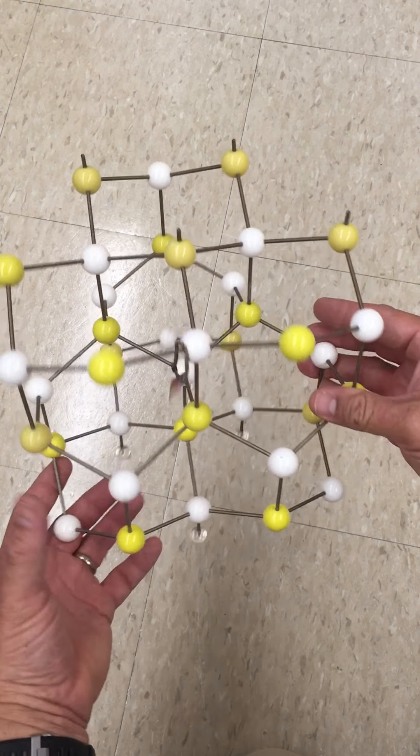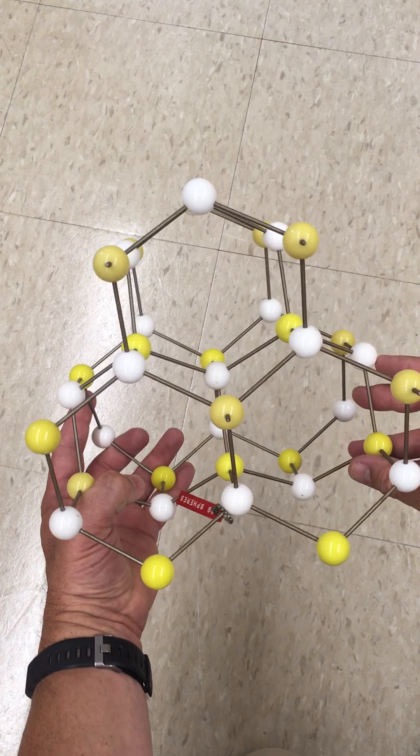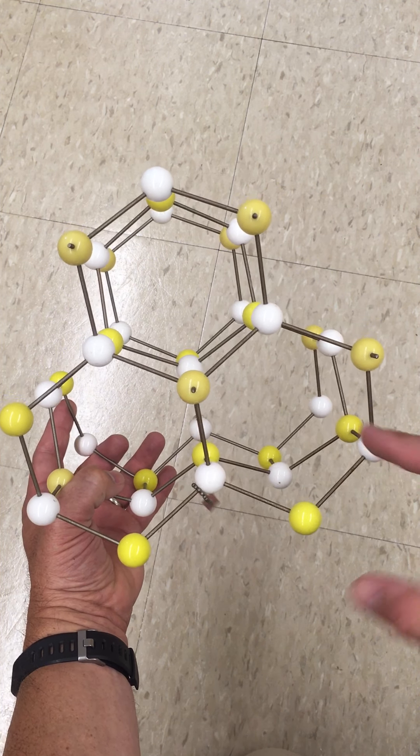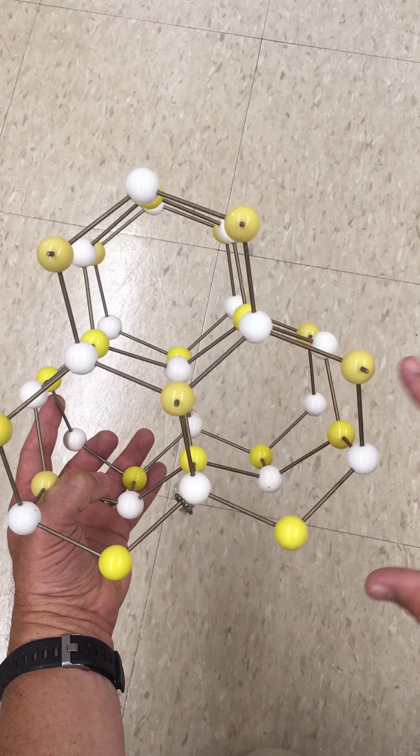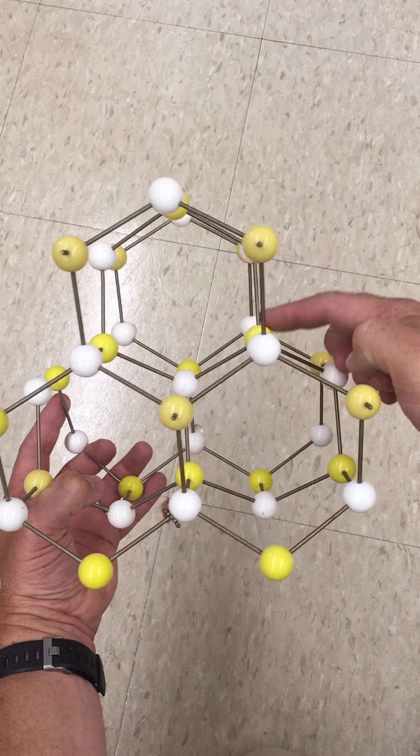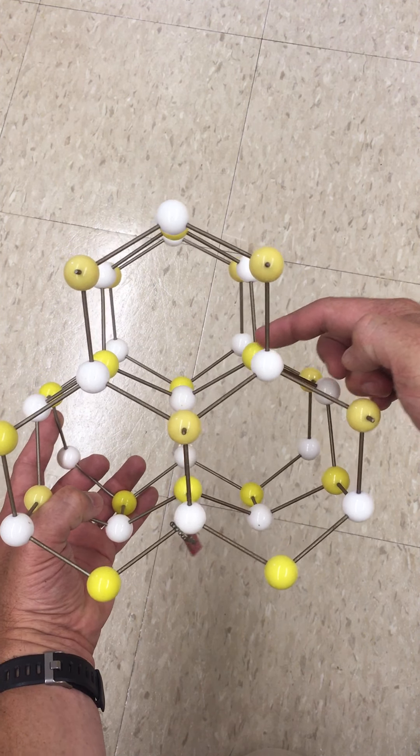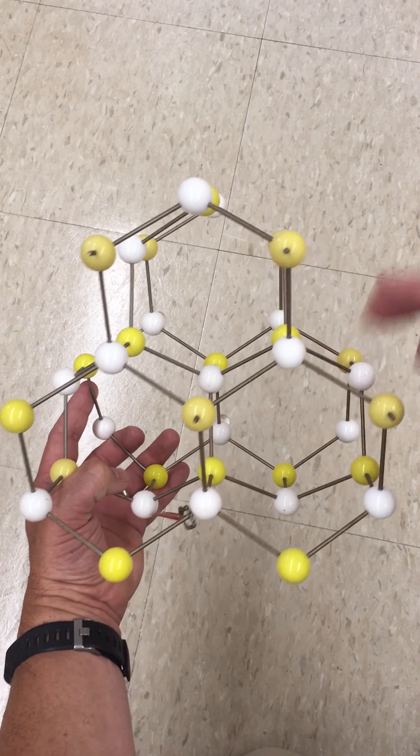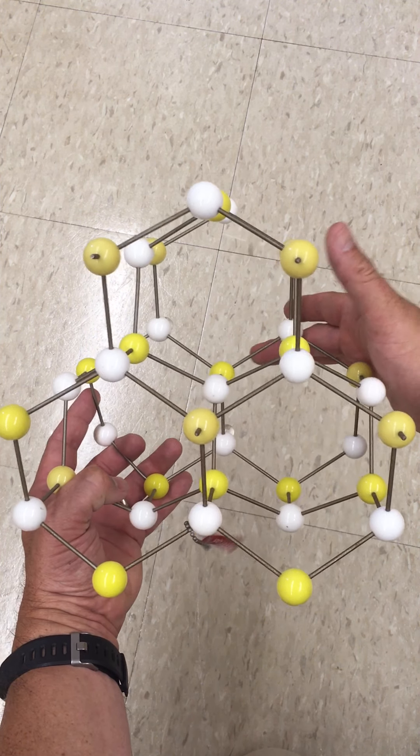And if I look at this from above, or from this direction, we can see that we have a sulfide layer A. We have a B layer here, and then we go down one more layer, and this layer matches the A layer here, so this is another A layer.